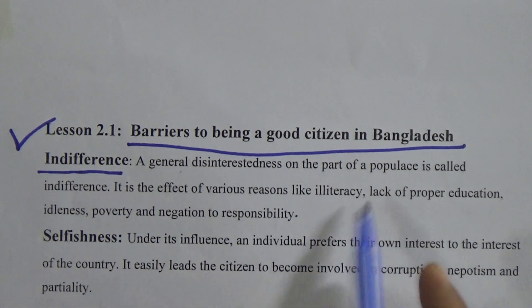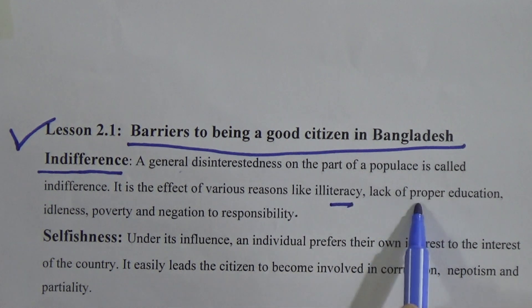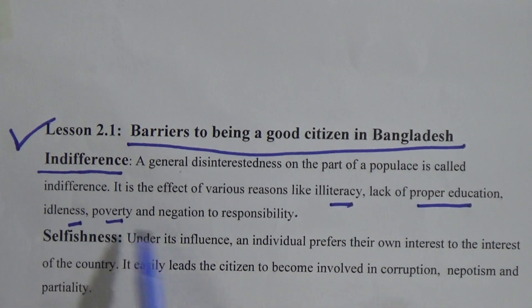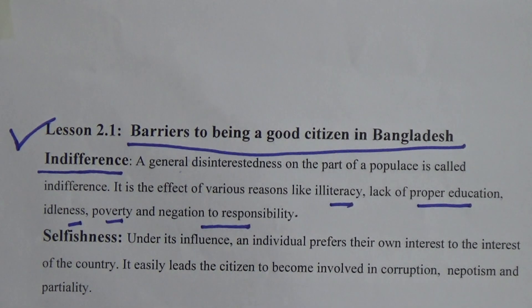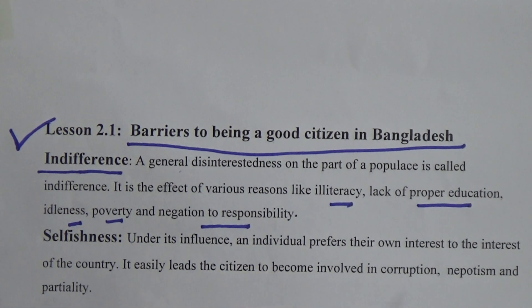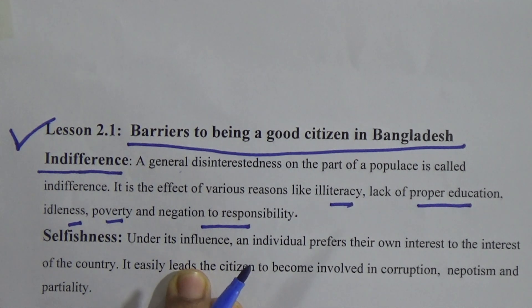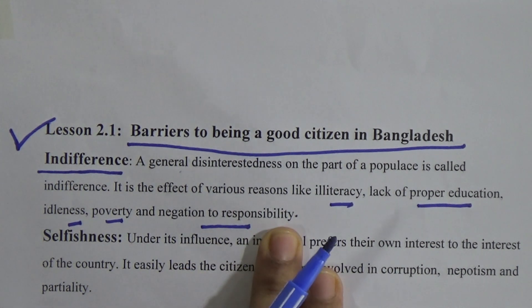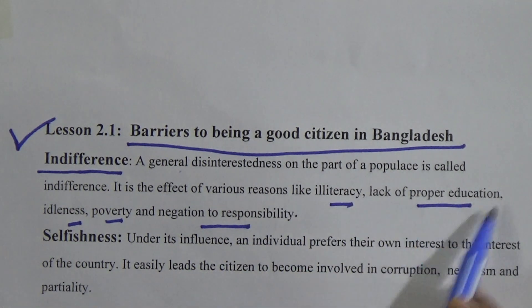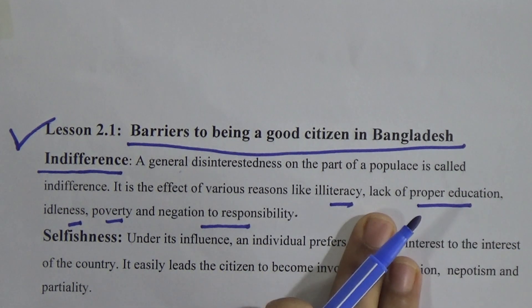Indifference is the effect of various reasons. There are many reasons behind it, like illiteracy, lack of proper education, idleness, poverty, and negation of responsibility. Whenever a person doesn't have enough education, is idle, is under poverty, or has lots of responsibility but is not accountable, these things affect people and indifference happens, preventing a person from becoming a good citizen. Proper education can remove this greatly.